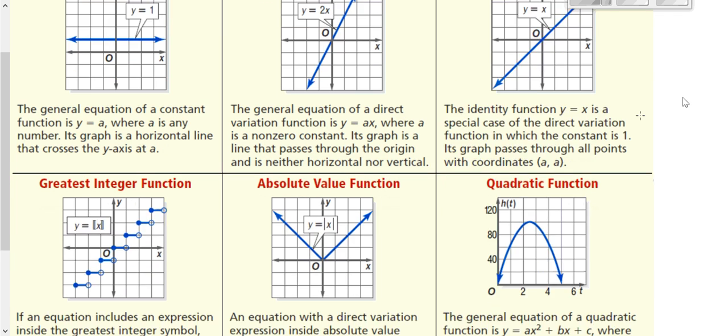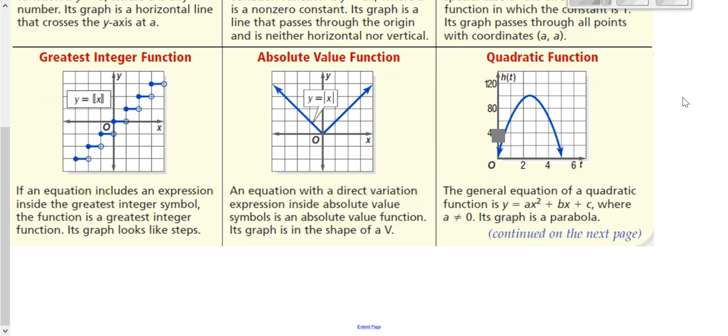We also have our step function or greatest integer function here, which has these strange brackets and is a series of horizontal segments. We have absolute value, which is always in the shape of a V. We've looked at quadratics before that are in the shape of a parabola.